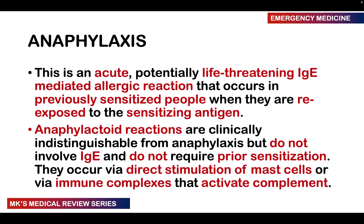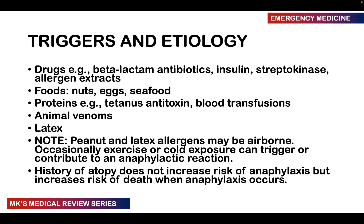Once mast cells release their pre-formed mediators of inflammation, these result in the characteristic changes we see in patients with either anaphylaxis or anaphylactoid reactions. In anaphylaxis, the IgE antibodies coat the mast cells and the basophils. When these antibodies are cross-linked, this gives the signal for the mast cells to degranulate and release their chemicals — histamine, heparin, and other inflammatory mediators.